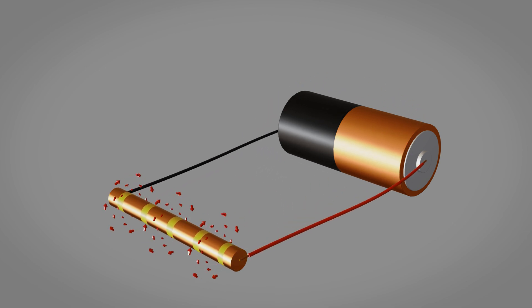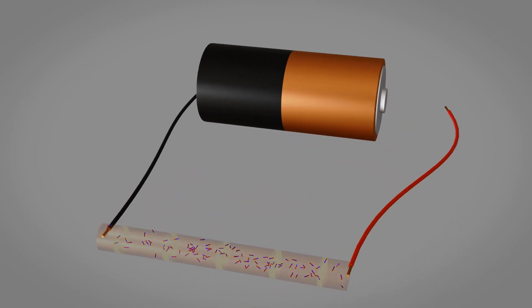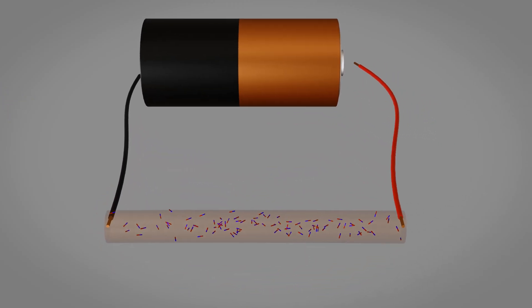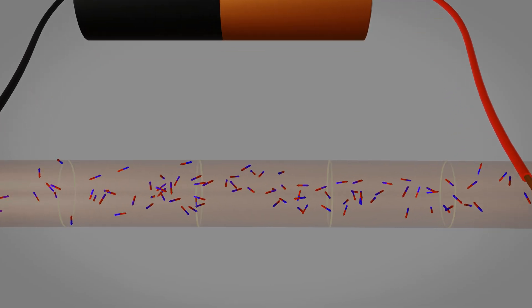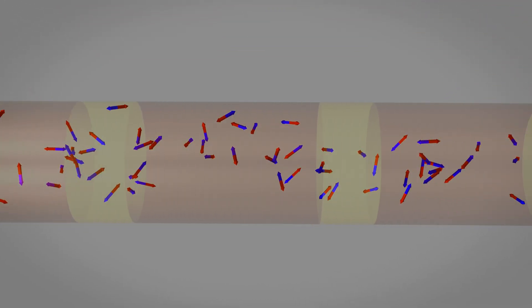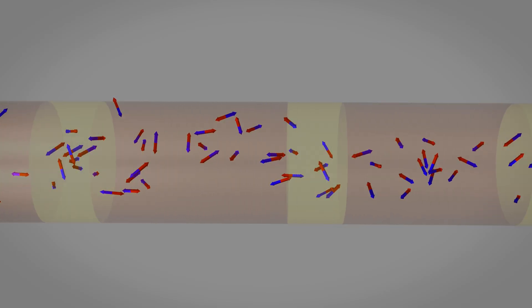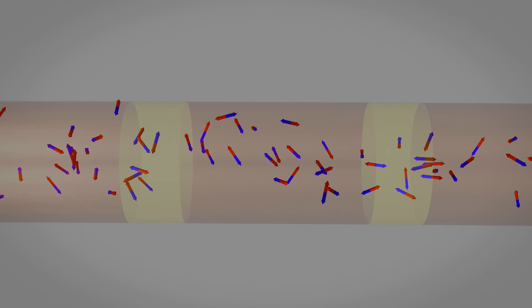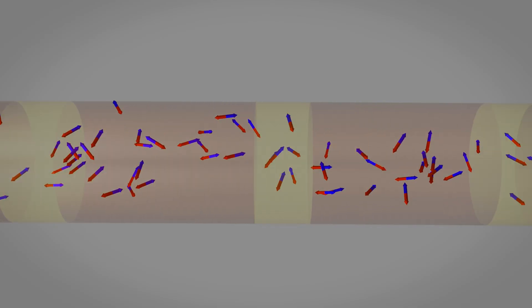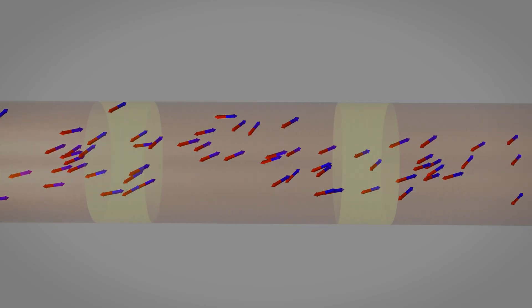To understand how this works at the atomic level, imagine the copper wire contains billions of randomly oriented atoms. When electricity flows through the wire, it creates a magnetic field that penetrates any ferromagnetic core placed inside the coil. This magnetic field aligns the iron atom's magnetic domains in the same direction, dramatically amplifying the overall magnetic effect. The more current we apply, the more domains align, creating a stronger electromagnet. This continues until all domains are perfectly aligned, a state called magnetic saturation.